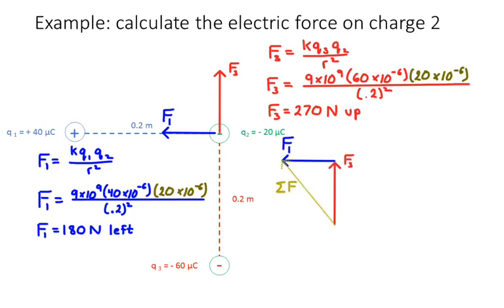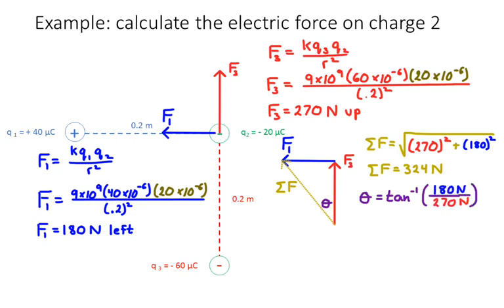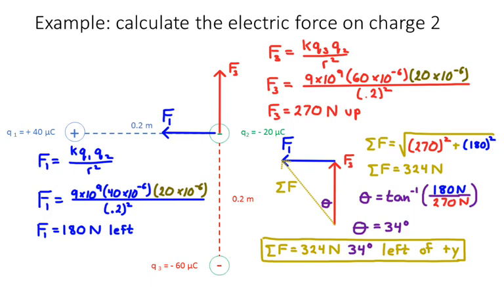So adding my vectors tip to tail, just like we learned last year in physics 1, going up and then to the left would result in a net force up and to the left. I can use Pythagorean's theorem to figure out the size of the net force. So the square root of 270 squared plus 180 squared is 324 newtons. And then I can find the direction by using the inverse tangent. And so the angle would be 34 degrees.